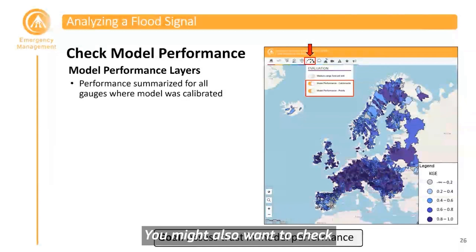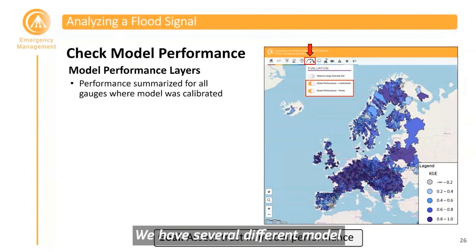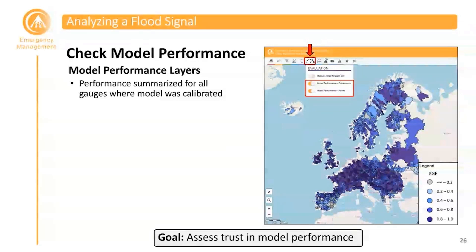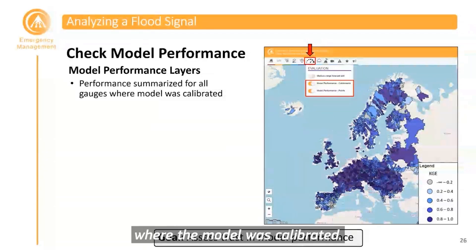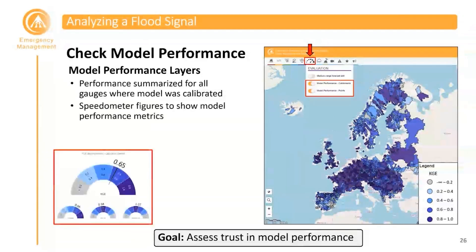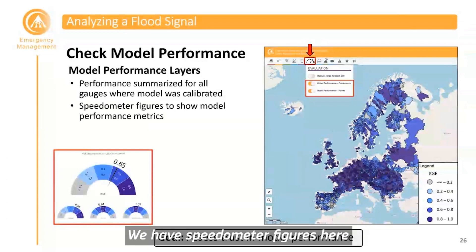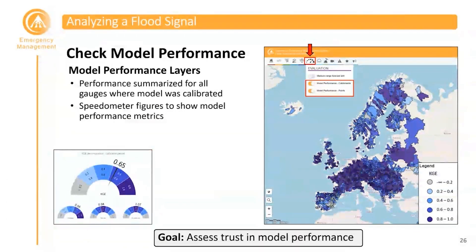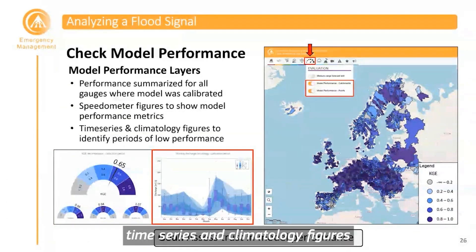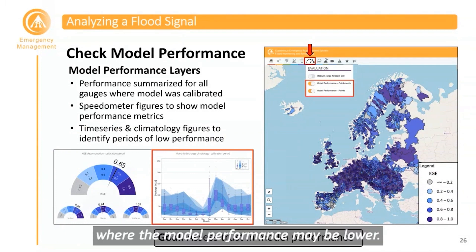You might also want to check the model performance for an area. There are several model performance layers which summarize model performance for all gauges where the model was calibrated. Speedometer figures show model performance metrics, and time series and climatology figures help identify periods where model performance may be lower. The goal is to assess your trust in the model performance.